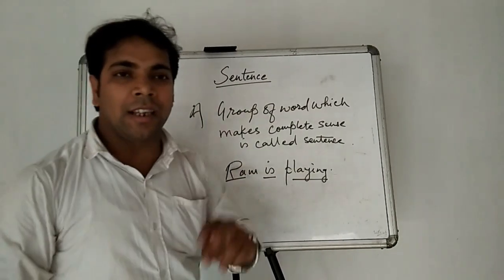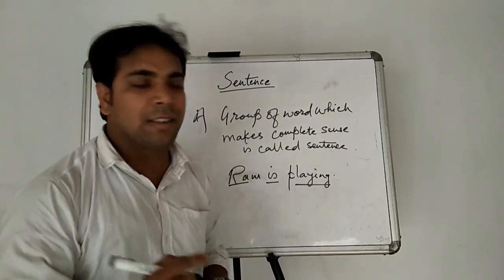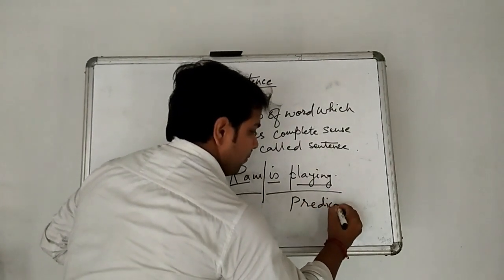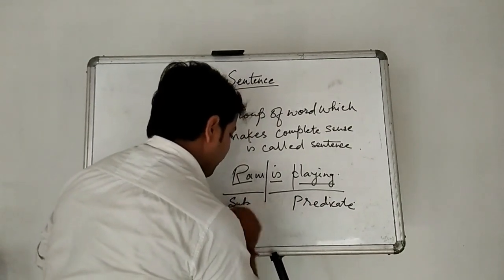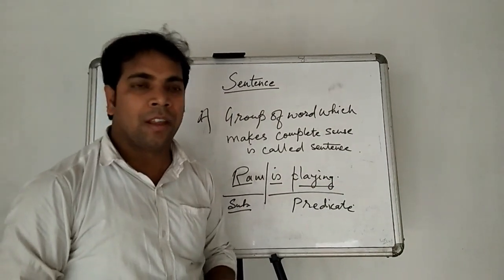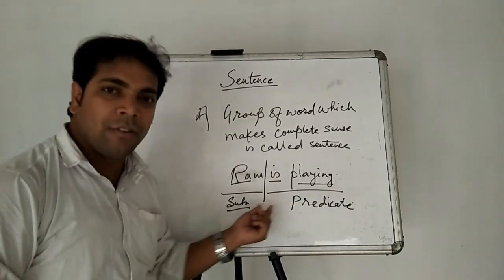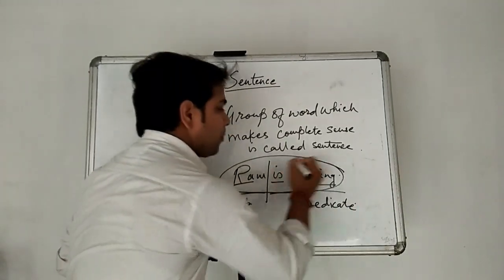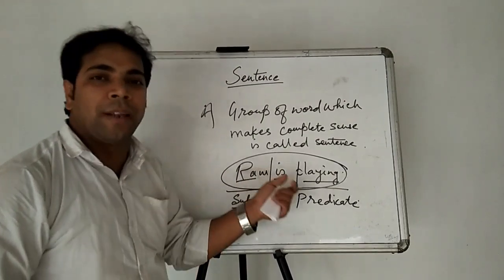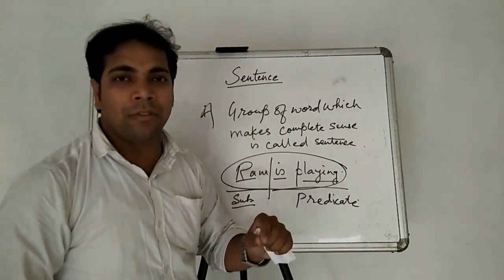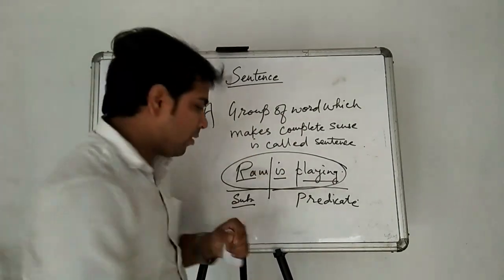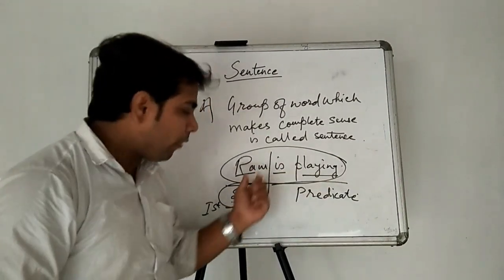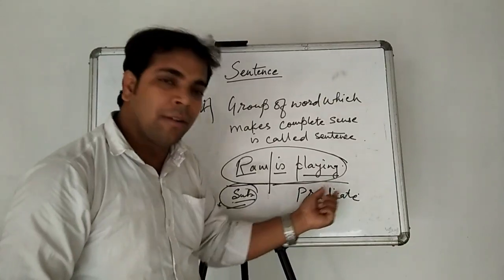Now just let us think about that sentence. It has two main parts. The first is subject and the rest part is called predicate. Now we have to understand what is subject and what is predicate. In this sentence, Ram is plain — we have talked about who is plain. In any sentence, if we talk about someone who is doing anything, that we call subject. The second part, what the subject is doing, that we call predicate.